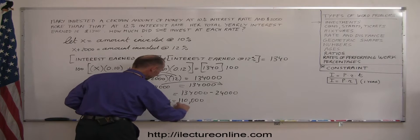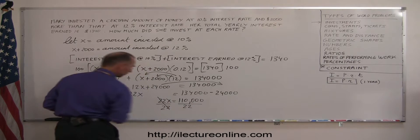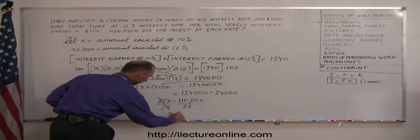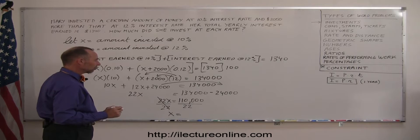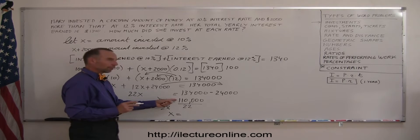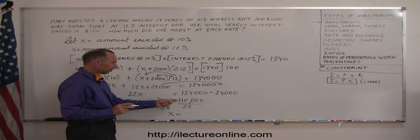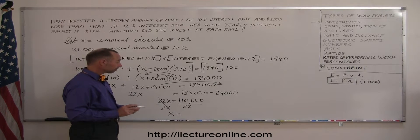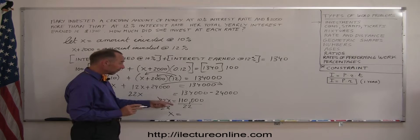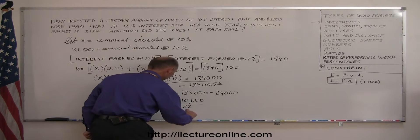Finally, I divide both sides of the equation by 22. That cancels out, so I end up with x equals... what's 110,000 divided by 22? Well, if I were to double this number and make it 220,000 divided by 22, that would give me 10,000. So 110,000 divided by 22 is 5,000.